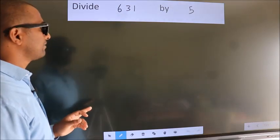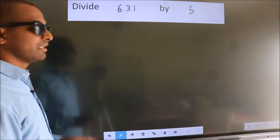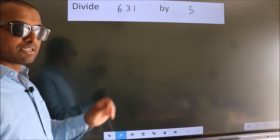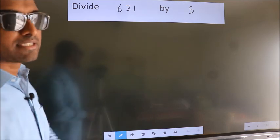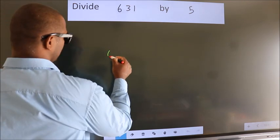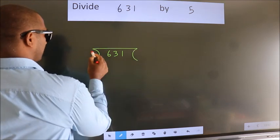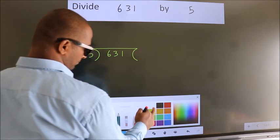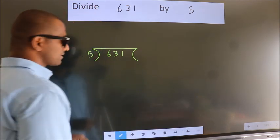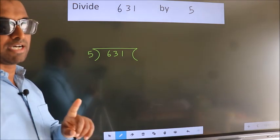Divide 631 by 5. To do this division we should frame it in this way: 631 here, 5 here. This is your step 1.